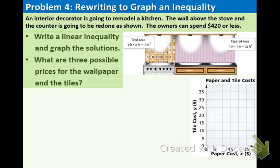So now, first of all, we want to write a linear inequality which is going to require us to define variables and then graph the solutions and then after that we're going to find three possible prices for the wallpaper and the tiles.